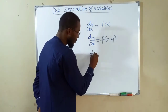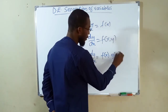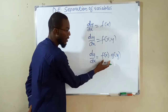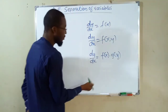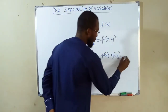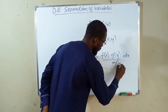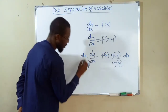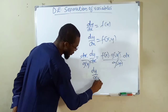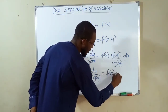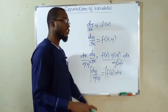Suppose we have a differential equation in the form of dy over dx equal to f(x) multiplied by g(y). We need to separate these functions: connect f(x) with dx and dy with g(y). To do that, multiply both sides by dx and divide both sides by g(y). This gives us dy over g(y) equals f(x) dx. Hence, we can apply integration to both sides to find the general solution.